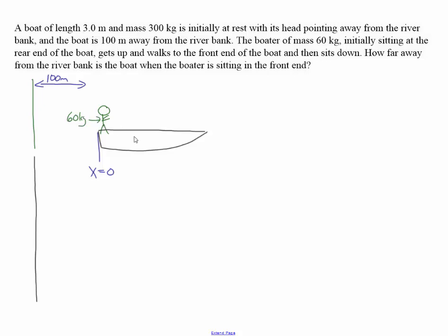We need to calculate where that center of mass is. We're going to let x equals zero be the left end of the boat where it starts initially, 100 meters from the shore. The man is at position x equals zero. We're going to make the assumption that the boat is uniform, so its center of mass is right at the center of the boat. So the boat has a mass of 300 kilograms, and we treat all its mass as concentrated at its center, which is 1.5 meters to the right of the back of the boat. We can treat this as two point masses.